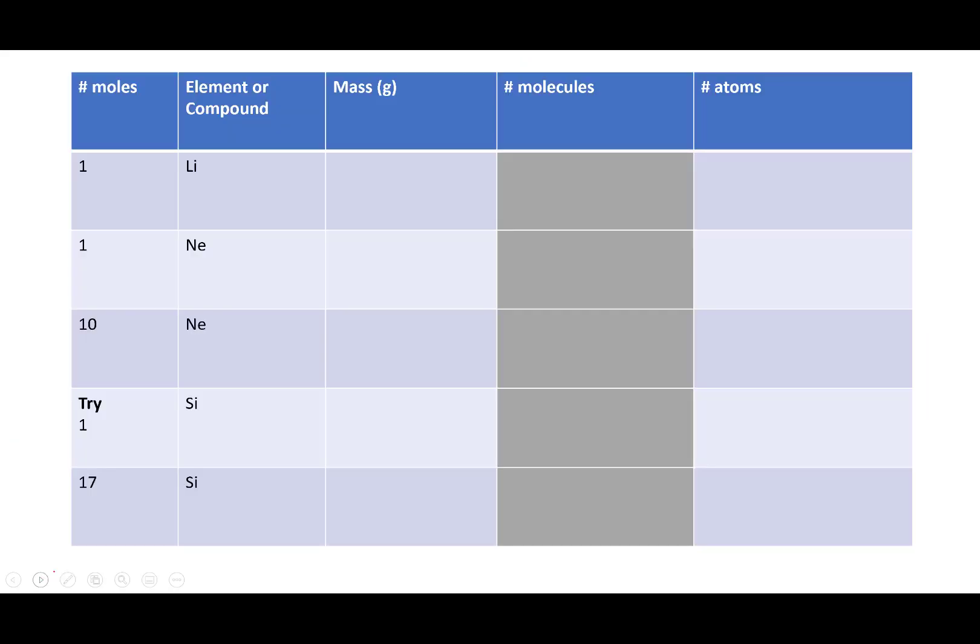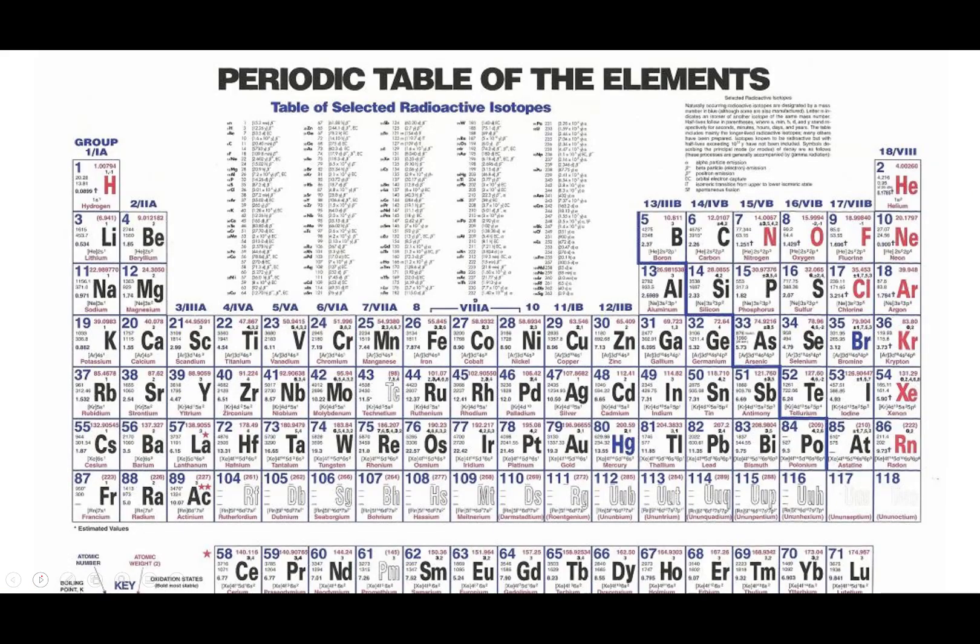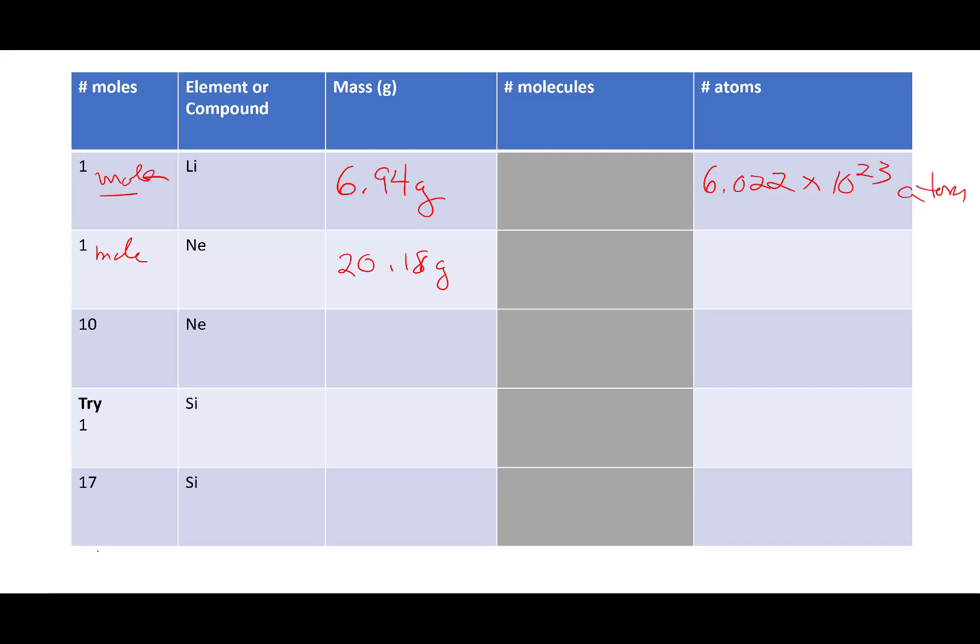So grab your periodic table. The periodic table is such a magically fabulous device. If I have one mole of the element lithium, lithium has an atomic mass of 6.94 grams. Now if I have one mole of anything, it's going to contain 6.022 times 10 to the 23rd. So if I have one mole of lithium, it's going to contain that many atoms. If I have one mole of the element neon, on the periodic table its mass is going to be 20.18 grams. How many atoms are going to be in that sample? 6.022 times 10 to the 23rd.